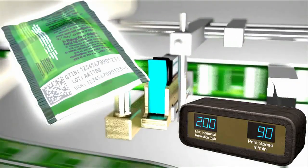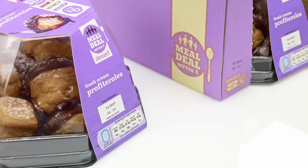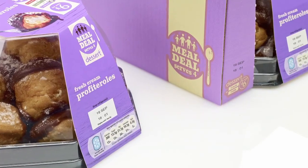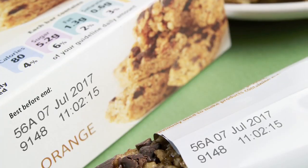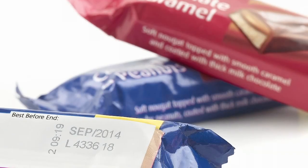We're seeing packaging moving to more shelf-ready packaging. In secondary, shelf-ready packaging is glossy, and in primary, we're seeing more plastic films and things like that being used. So we need inks that can code onto them reliably and stick to them.